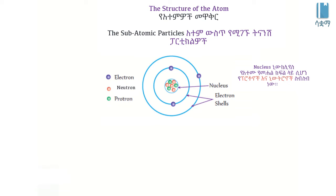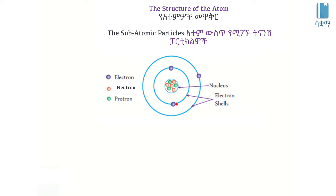If there are electrons into the nuclei, these electrons come in. The electron will revolve around the nucleus in a small orbit. The electron will focus on the distance of the nucleus. In this case, the electron will orbit around the nucleus.